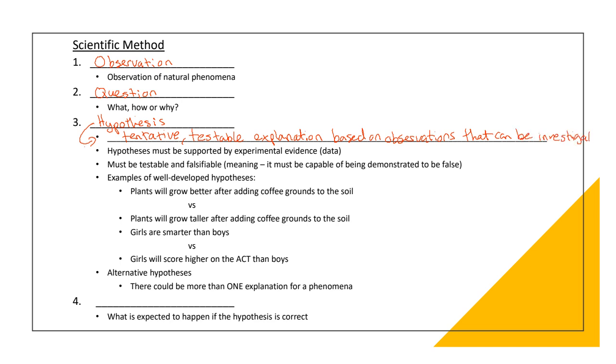So that's where the hypothesis is. It's a tentative, testable explanation. Now, this hypothesis must be supported by data, by evidence. Another thing about hypothesis is they must be testable, but they have to be also falsifiable. In other words, it must be capable of being demonstrated to be false.